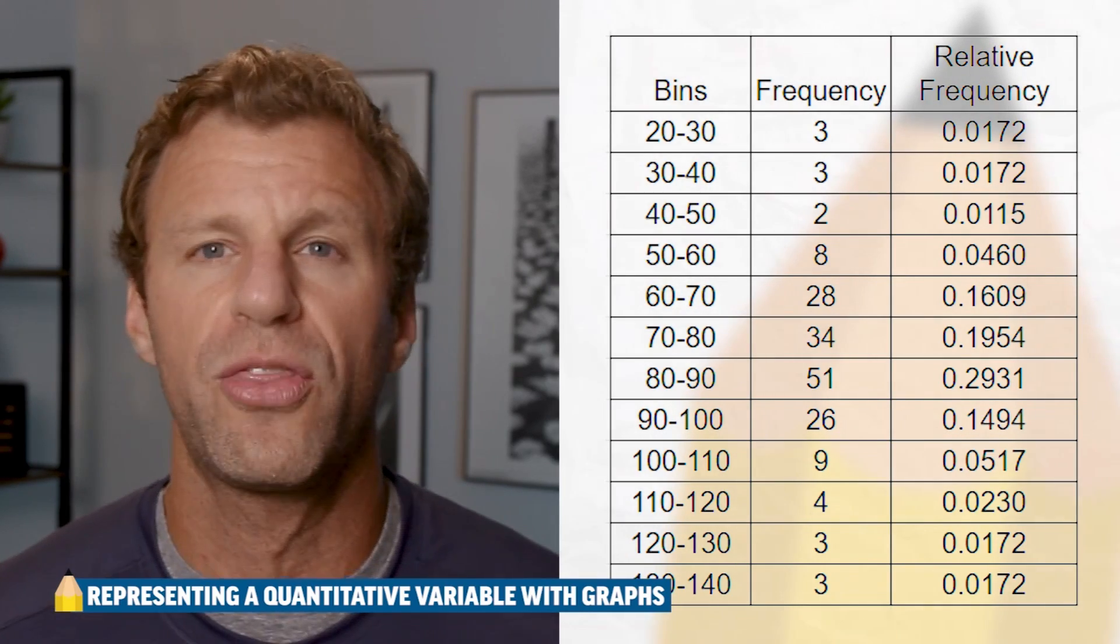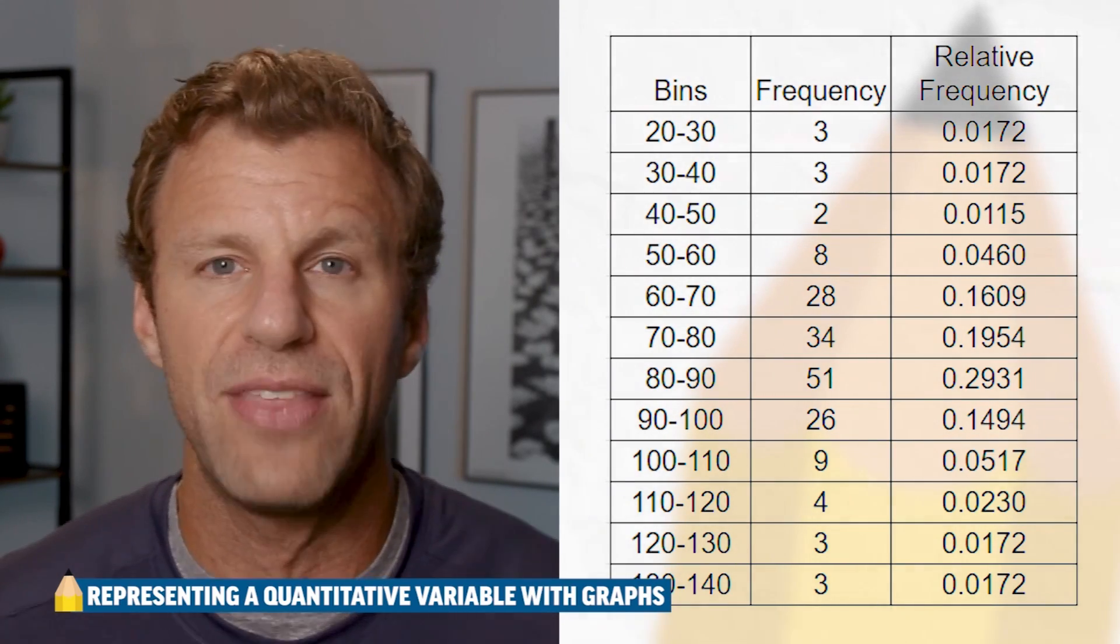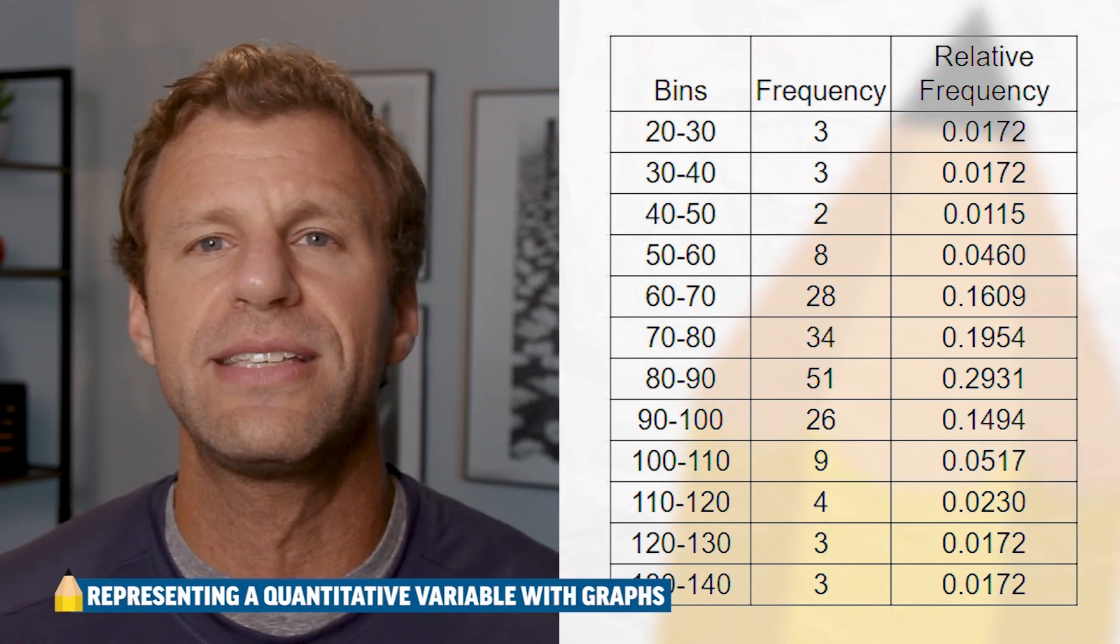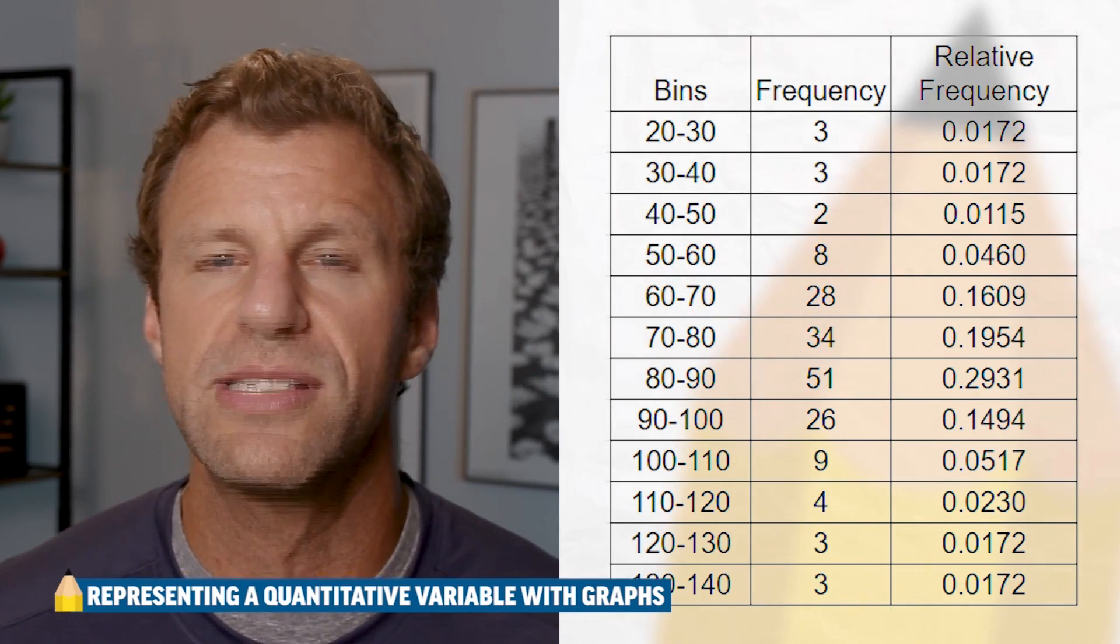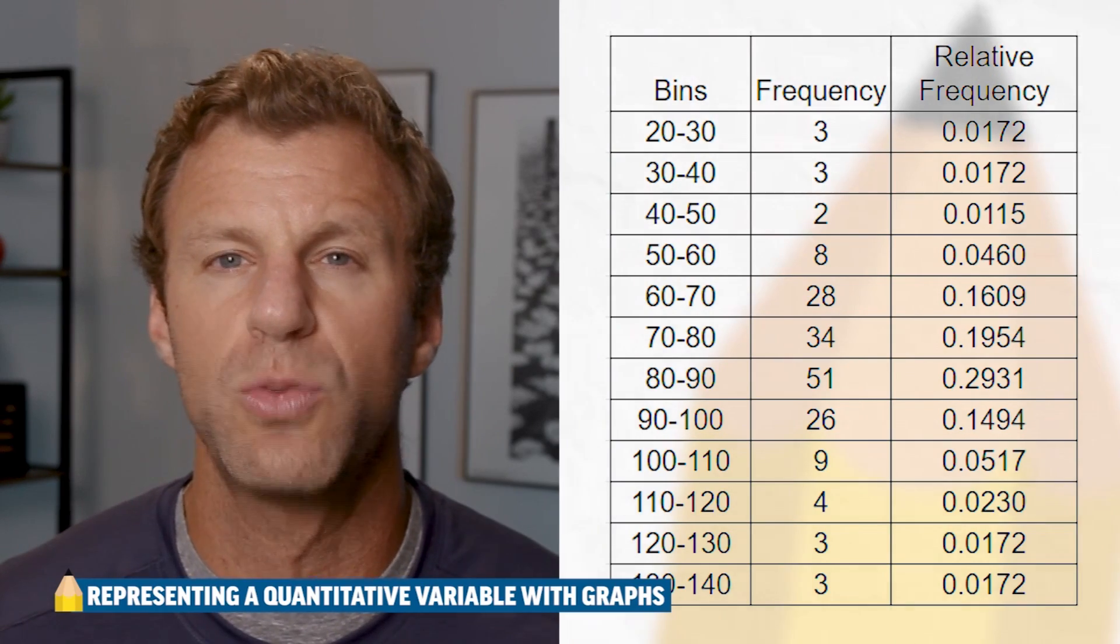Then you just go through your data and you count how many trees were 20 to 30 feet, count them up, and that's the frequency. Or you could obviously take that value, divide it by the total of 174 total trees in the sample, and you can get the relative frequency as well.